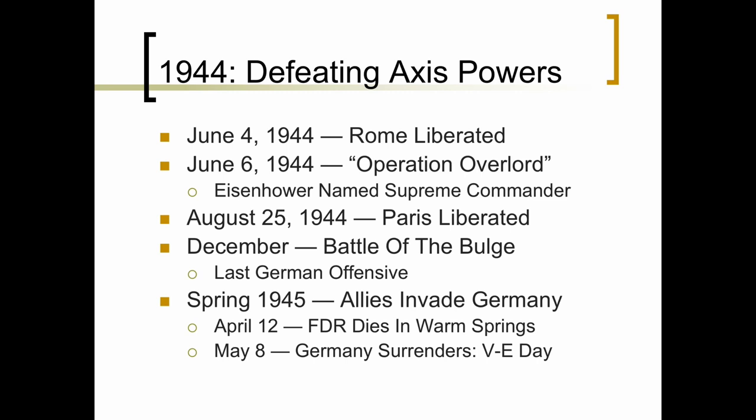In 1944, the Allies were able to lead the final blows to the Axis powers. In June of that year, Rome was liberated. A couple of days later came Operation Overlord — the D-Day invasion — with Eisenhower as supreme commander. It was George C. Marshall, commander of the army, who put Eisenhower in charge of Operation D-Day. In August, Paris was finally liberated by the Allies, and in December there was the last Battle of the Bulge, the final German offensive. By spring of 1945, the Allies were able to move into Germany.